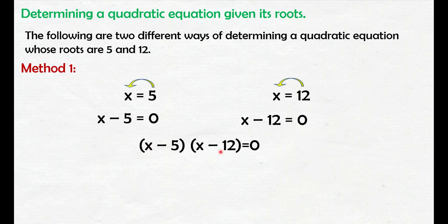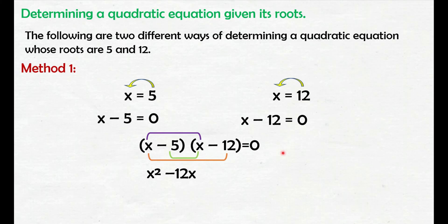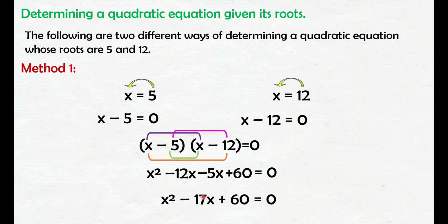Then we use the FOIL method: x times x is x squared; x times negative 12 is negative 12x; negative 5 times x is negative 5x; and negative 5 times negative 12 is positive 60, equals 0. Combining like terms: negative 12x and negative 5x gives negative 17x. So, the quadratic equation is x squared minus 17x plus 60 equals 0.